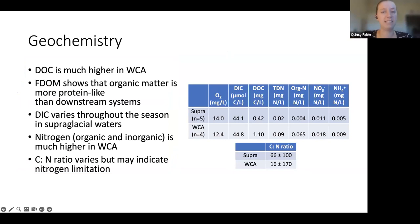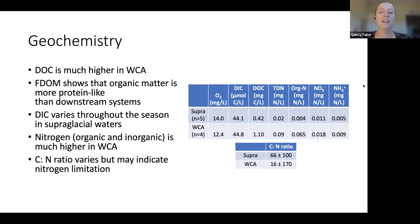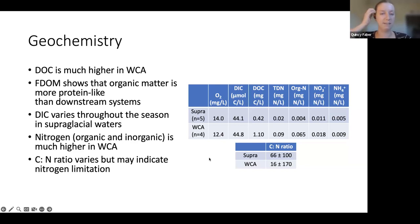We found that geochemically the weathering crust is distinct from a nearby superglacial stream. There was less oxygen in the weathering crust, similar DIC, but major differences in dissolved organic carbon and organic nitrogen — with DOC over twice as high in the weathering crust and organic nitrogen much higher. Inorganic nitrogen is also about twice the concentration. Additionally, FDOM data showed that organic matter in the weathering crust is much more protein-like than any other system studied along the Watson River, indicating significant new production of organic matter.